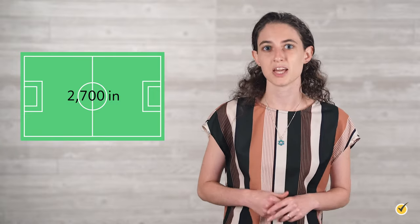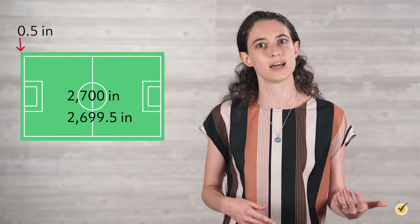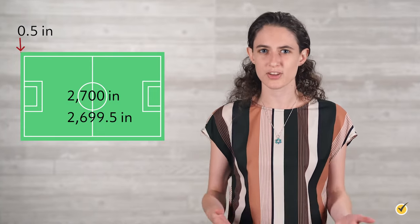Compared to absolute error, relative error is often seen as more useful because absolute error doesn't show the significance of the error in context. For example, a soccer field is 2,700 inches long and your measurement is off by 0.5 inches — that 0.5 inches won't throw off your calculations too much. However, if a post-it note is 3 inches long and your measured value is off by the same 0.5 inches, giving you 2.5 inches, that's a much more significant difference. In our relative error formula, dividing by the known value gives us that context of whether our object is off by 0.5 inches compared to a very large number, like the soccer field, or compared to a very small number, like the post-it note. Absolute error only tells us that we are off by 0.5 inches.